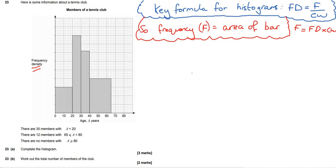If you're not fully sure on histograms, we're going to be taking a look at a few examples. Here is some information about a tennis club. There are 30 members with A less than 20. There are 12 members with 65 less than or equal to A less than 80. And there are no members with A bigger than 80. The first thing we need to do is work out the frequency density scale. The first bit of information: we're told that there are 30 members with A less than 20, so the frequency of this bar is 30. This tells us that 30 equals whatever the frequency density is for that, times the class width, which in this case is 20.